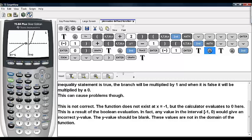This is a result of the Boolean evaluation. In fact, any value in the interval negative 1 to 0 with negative 1 being included would give an incorrect y value. The y value should be blank. These values are not in the domain of the function.